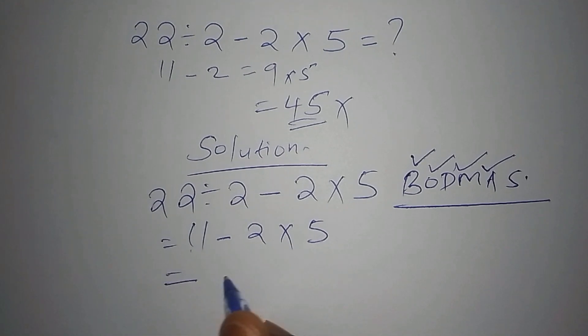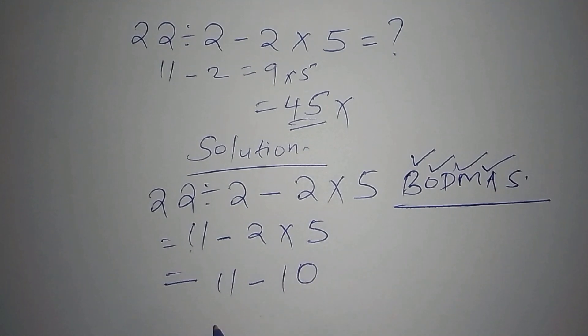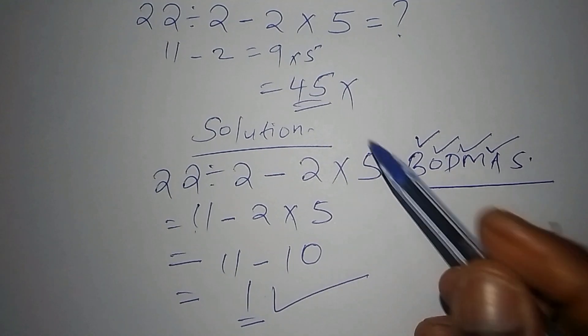So we are saying that this one is equal to 11 minus 2 times 5. The answer is 10. So our final answer now becomes 11 minus 10, and 11 minus 10 now becomes 1.